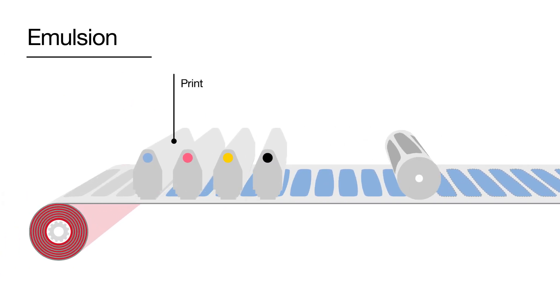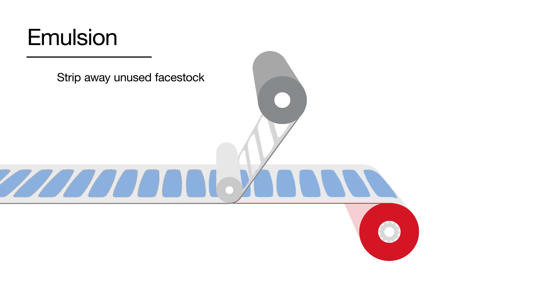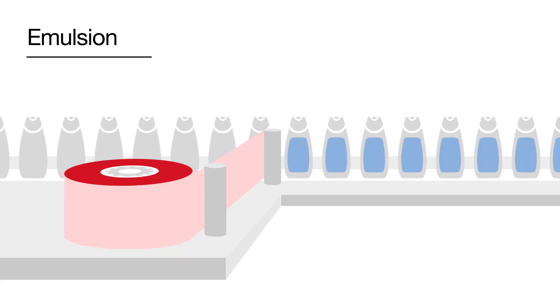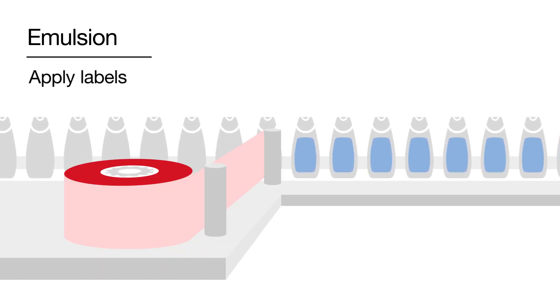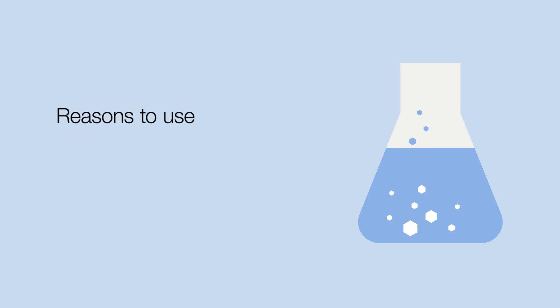Label converters can then print and die cut the roll and strip away the unused face stock material. The labels are now ready for the brand owner to apply onto packaging. There are lots of good reasons to use emulsion adhesives compared to other types of adhesives, such as hot melt or solvent.